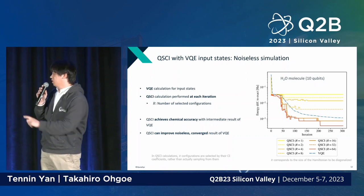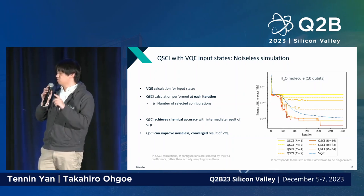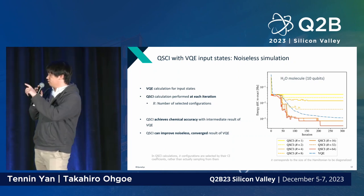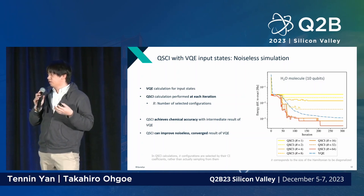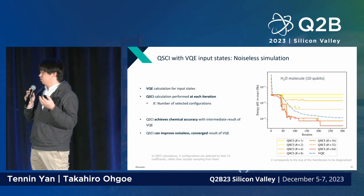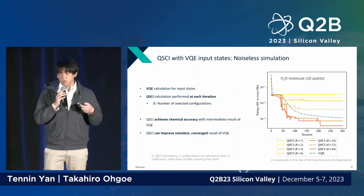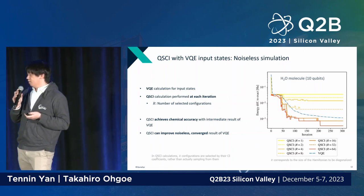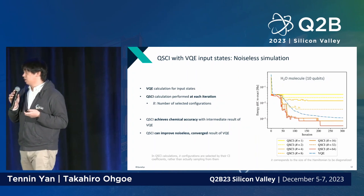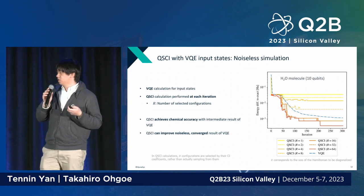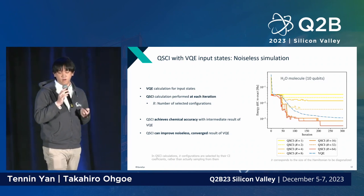Looking at the results: with 300 iterations, the blue line shows the VQE state. If we input this VQE state and take many samples selecting 64 configurations at the end, you can see from the red line that we get much better results than pure VQE. In other words, the quantum selected CI method can be seen as a post-processing method for the quantum state. Even when VQE alone cannot reach chemical accuracy, QSCI can more easily achieve the chemical accuracy that is essential for understanding chemical reactions.